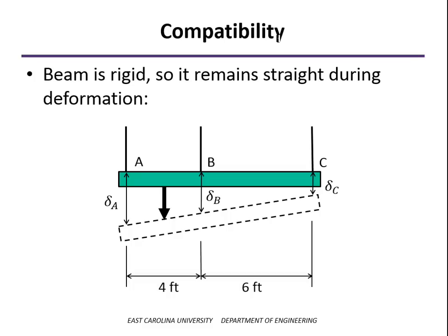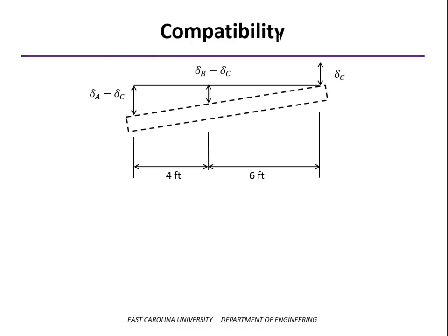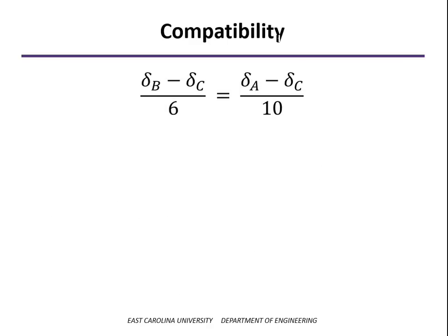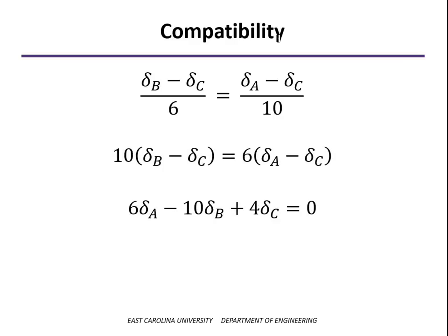Let's draw a couple of triangles here. And so the triangle on the right would have a base of 6 feet and a height of delta B minus delta C. And the large triangle would have a base of 10 feet and a height of delta A minus delta C. And so making those similar triangles, we can look at the ratio of the height to the base for both of those and do a little algebra on that and come up with this equation, which involves not the tension forces yet, but the deformation or the amount that each wire stretches.